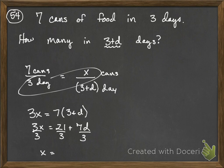So, our x, our cans, is 21 divided by three is seven, plus 7 over 3d. Alright, and that's going to end up being answer choice k.